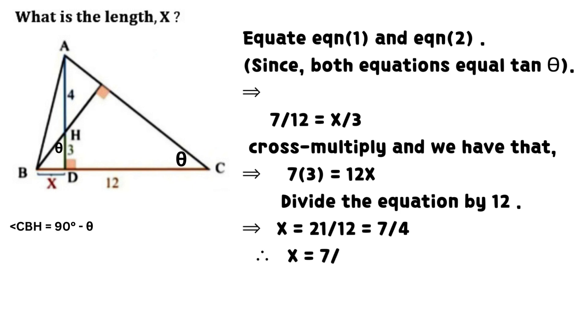Cross multiply and we have that. It implies that 7 multiply by 3 equals 12 times x.